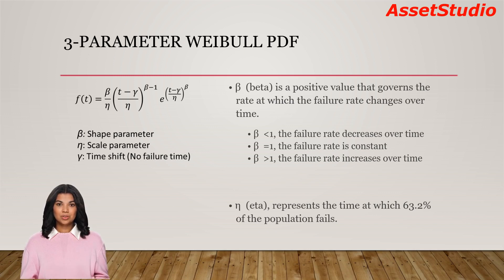If beta is equal to 1, the failure rate is constant. If beta is greater than 1, the failure rate increases over time. Eta, also known as characteristic life, represents the time at which 63.2% of the population fails.